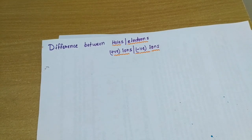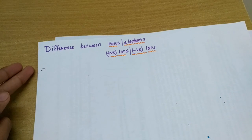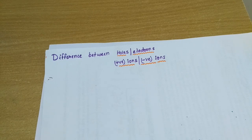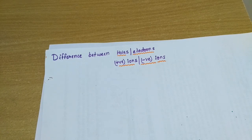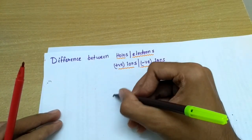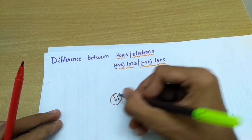Let's discuss a small but quite confusing topic. We will be discussing the difference between holes, electrons, and positive ions and negative ions — that is, the electron-hole pair occurring in semiconductors, and what positive ions and negative ions actually are. I'm taking the help of a silicon semiconductor.